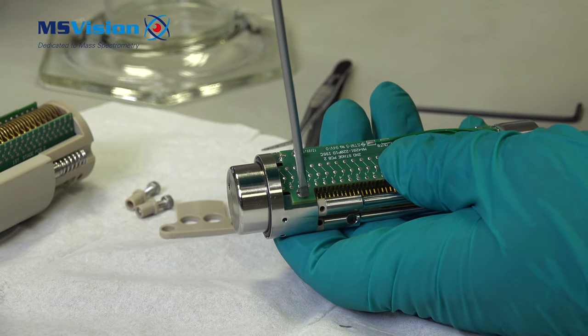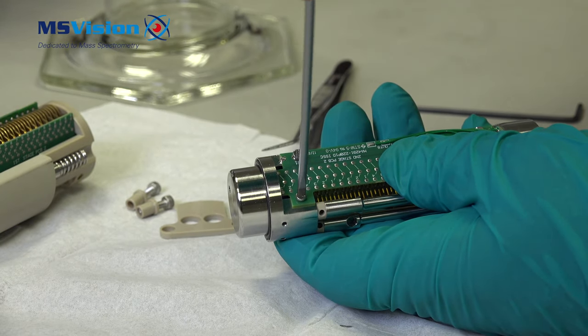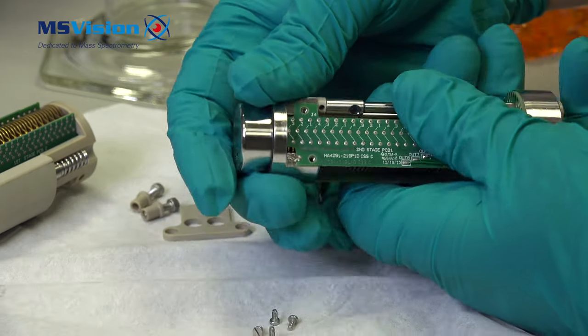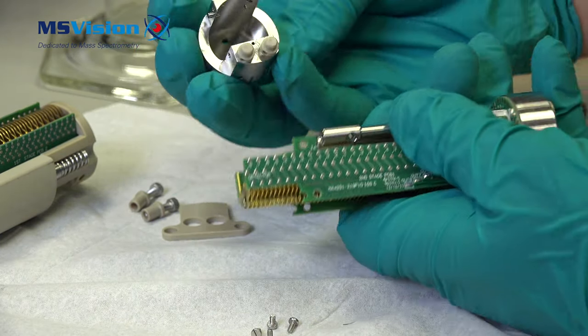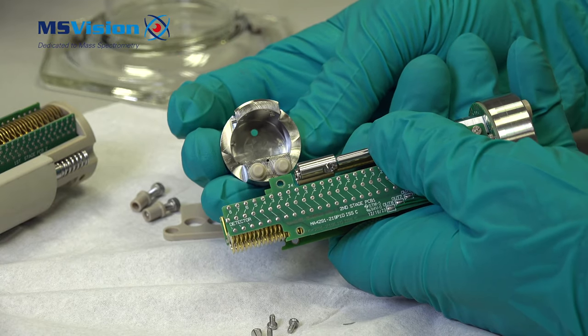Next, remove these four screws being careful not to drop them. Now we can take the top hat off. Inside around the hole you can see a black ring that needs to be cleaned.